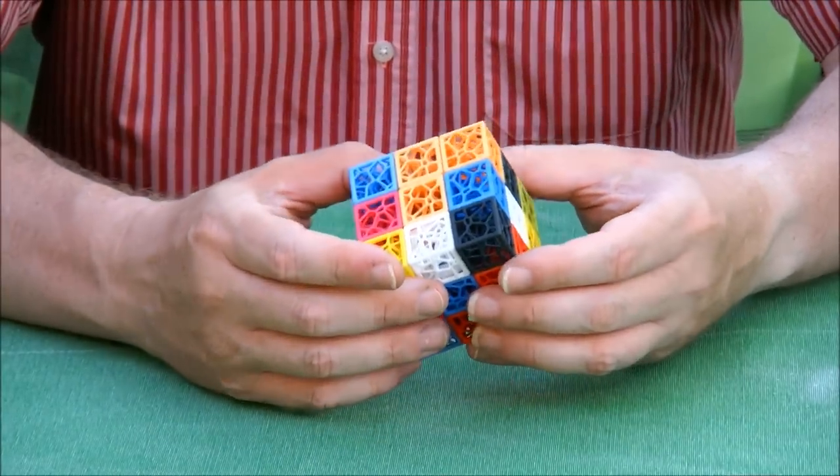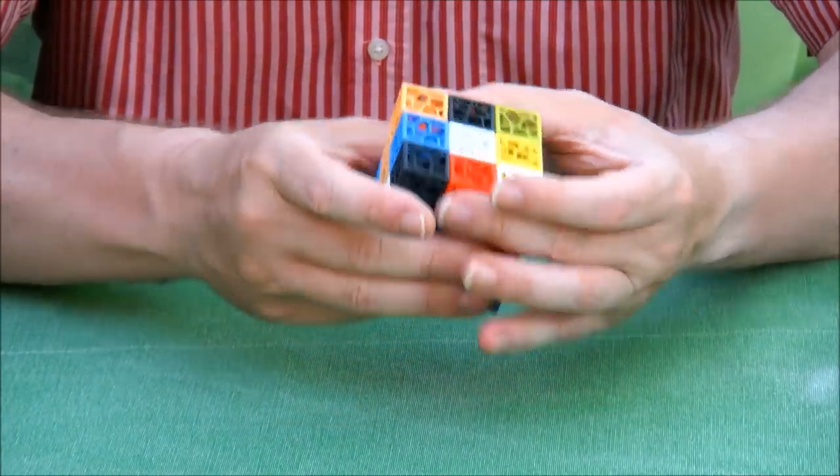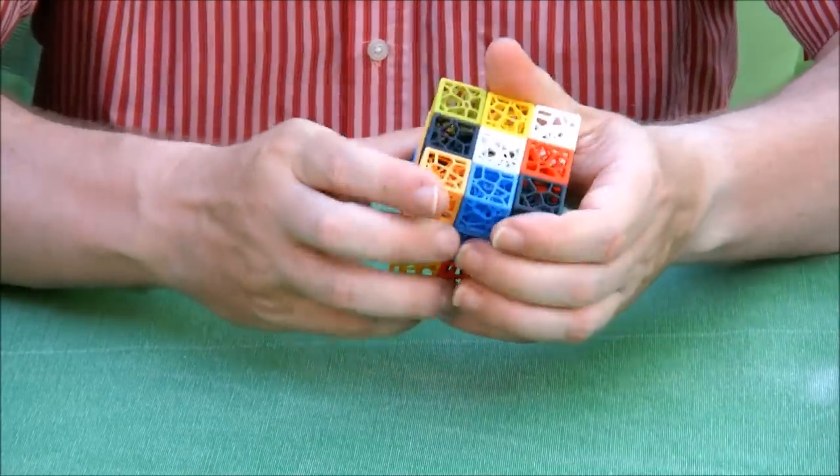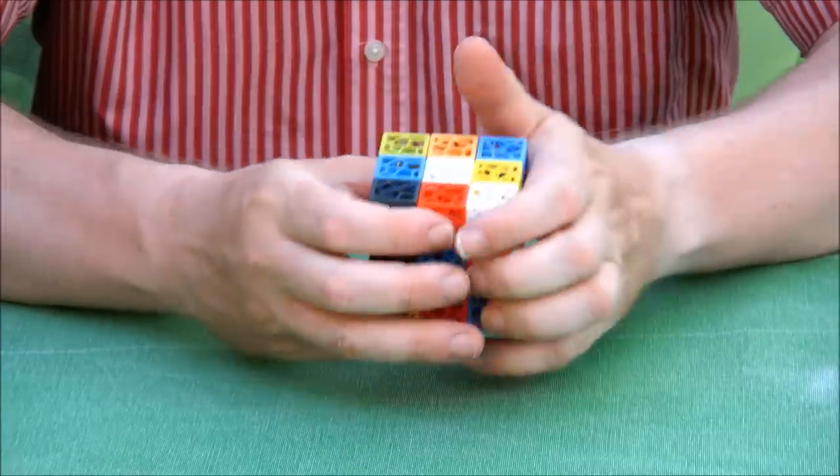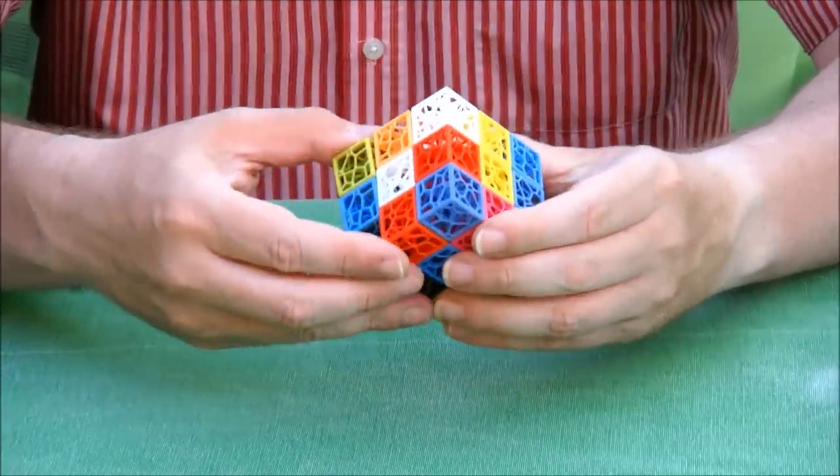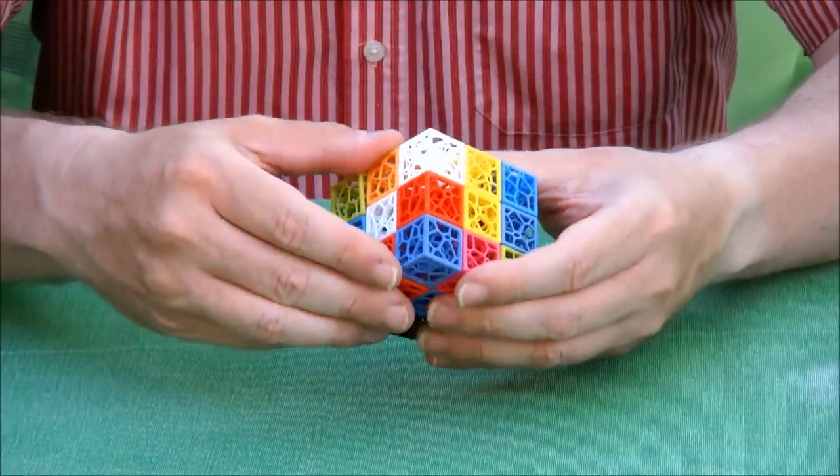Instead, I'm going to show you how this puzzle was built. It's a functional Rubik's cube, but it's not constructed like a regular Rubik's cube. It uses a rails mechanism.